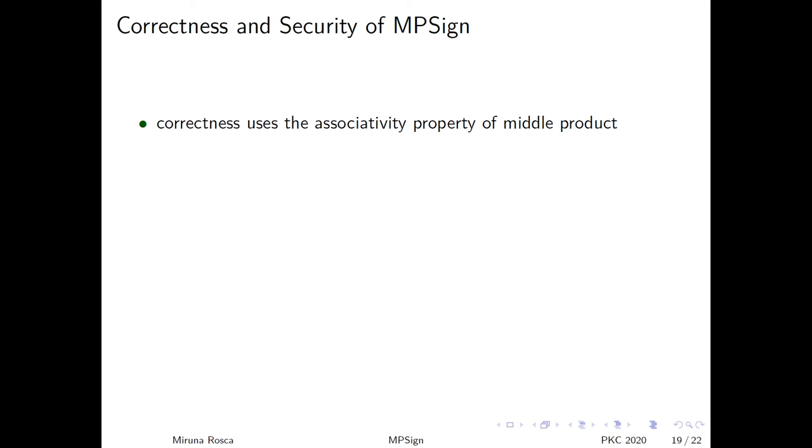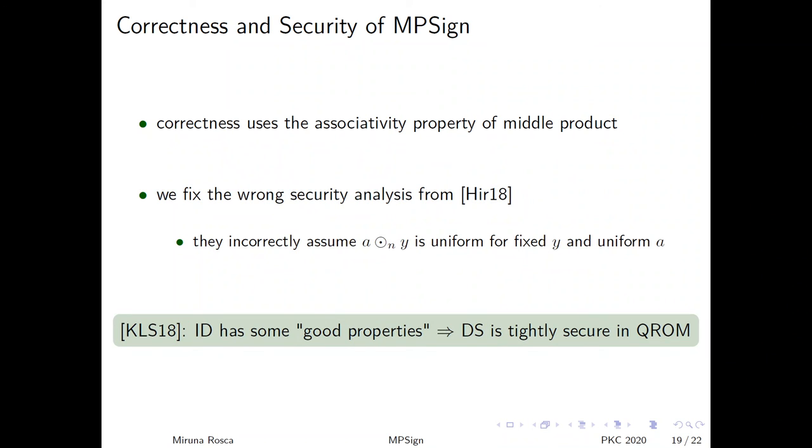I have to mention that a digital signature similar to the one I have just described has been proposed two years ago. Still, their security proof is wrong because they incorrectly assume that A middle product Y is uniform for fixed Y and uniform A. We managed to prove that our digital signature scheme is tightly secure in quantum random oracle model using a result from Eurocrypt 2018.